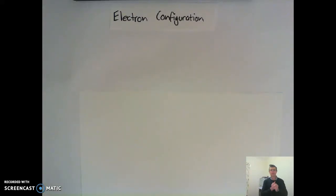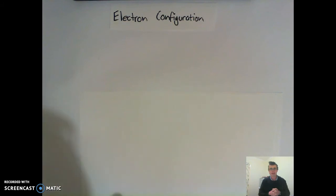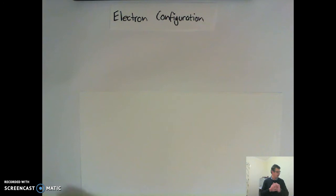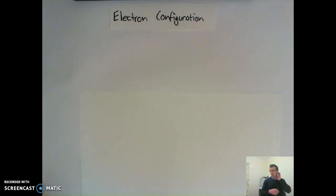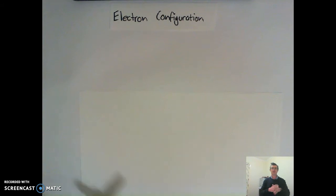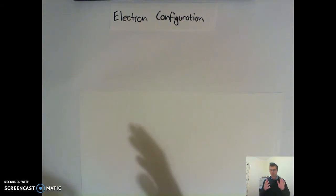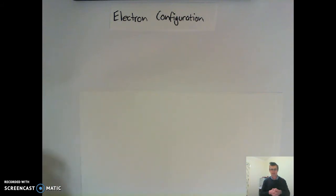Welcome to our next installment of Unite Chemistry. Today in this video, we're just going to look a little bit at electron configuration. Electron configuration is just another way to describe the amount of electrons that are in each of its electron shells. By the end of the video, hopefully you'll be able to tell where an atom sits on the periodic table by being able to name its electron configuration.